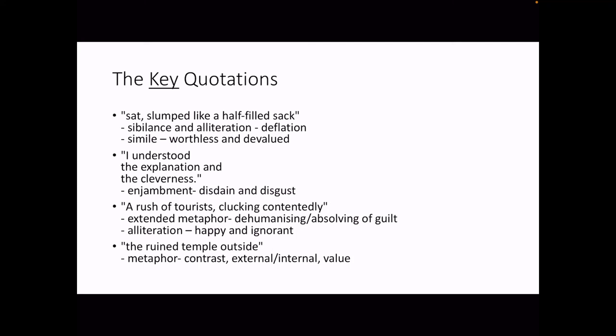Key quotations — if you can only remember four, these are them. First: 'Sat slumped like a half-filled sack' — sibilance and alliteration suggesting deflation and depression, with the simile showing the dwarf is worthless and devalued. Second: 'I understood the explanation and the cleverness' — enjambment showing the disdain and disgust McCaig feels towards the church. Third: 'A rush of tourists, clucking contentedly' — extended metaphor, dehumanising, absolving them of partial guilt, alliteration — they are happy and ignorant. Fourth, and if you can only remember one, make it this: 'the ruined temple outside' — the metaphor, the contrast, external versus internal, showing the ignored value of the dwarf.